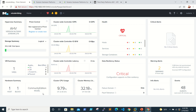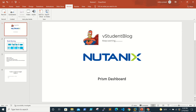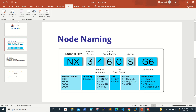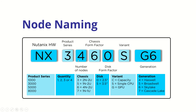Let me take you to this slide to explain what host and block mean, and the server models used. Looking at this example — NX3460S G6 — if nothing is explained it's difficult to identify the model, number of processors, number of nodes, processor generation, and hardware vendor.